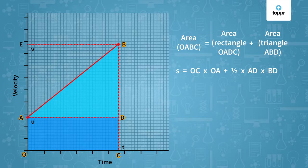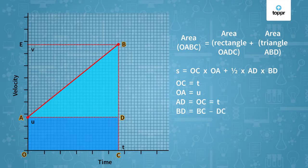Now we know the values. OC is equal to the time taken T. OA is equal to U, the initial velocity. AD is equal to OC, which is equal to the time taken T. And BD is equal to BC minus DC, which is also equal to OE minus OA, which is just V minus U.